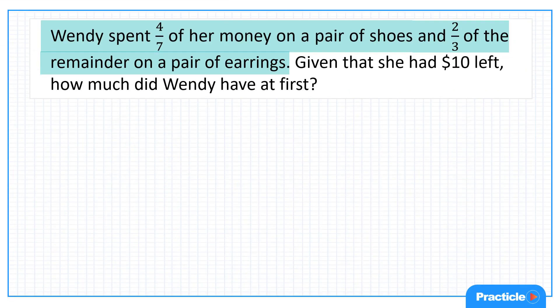Wendy spent 4/7 of her money on a pair of shoes and two-thirds of the remainder on a pair of earrings. This looks like a pretty long sentence, right? So to make this a little bit less scary, we are going to break this sentence up into two parts.